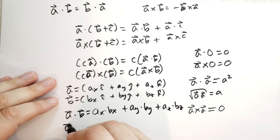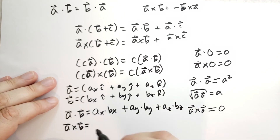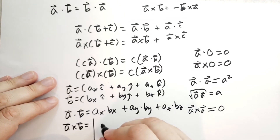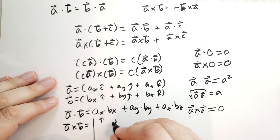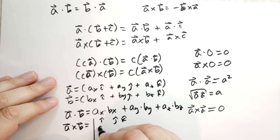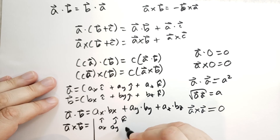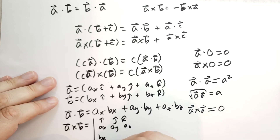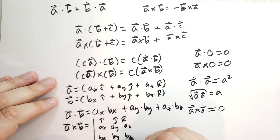The cross product is a little more involved, but if you work it out, you'll find it's the same as the determinant of the following matrix: I-hat, J-hat, K-hat in the first row; AX, AY, AZ in the second row; BX, BY, BZ in the third row.